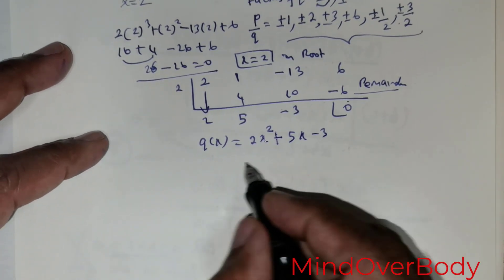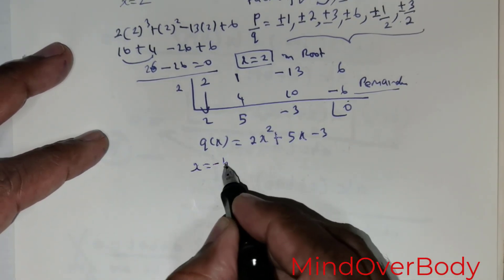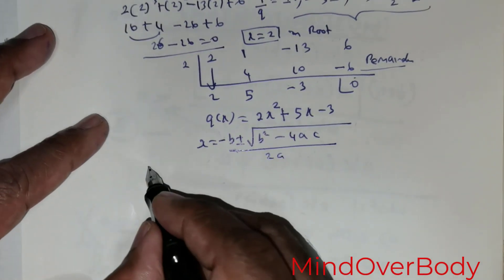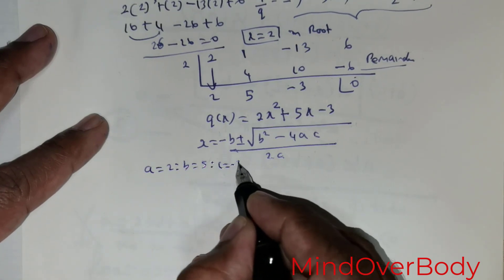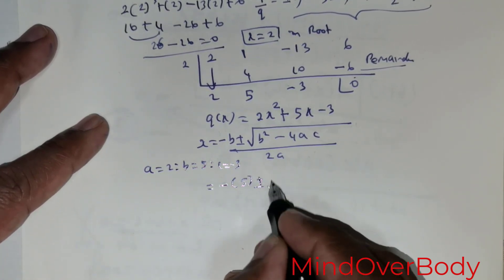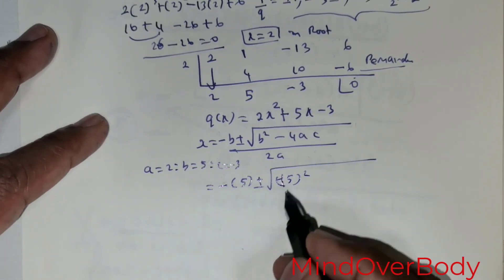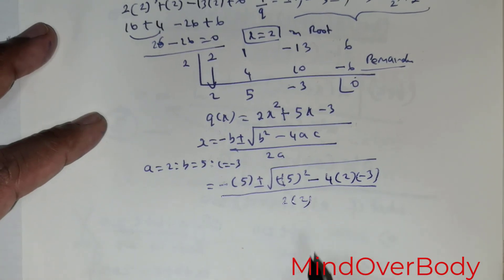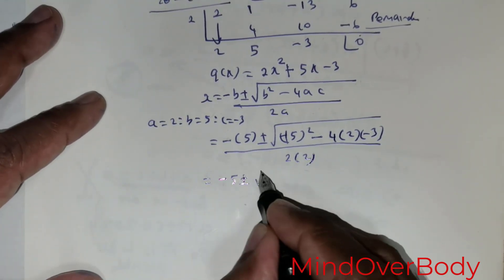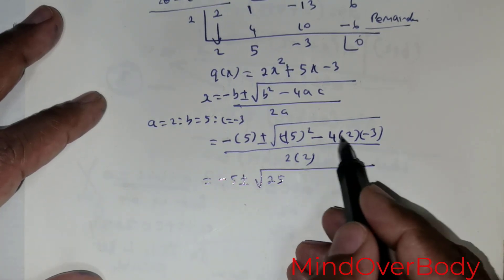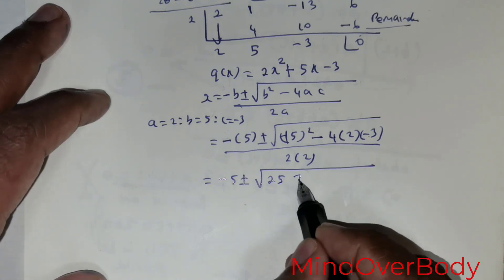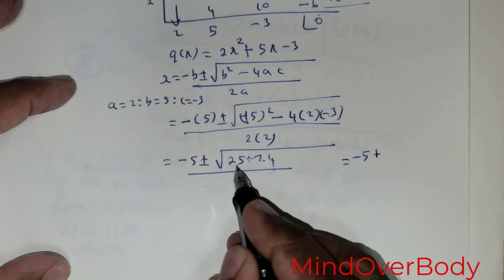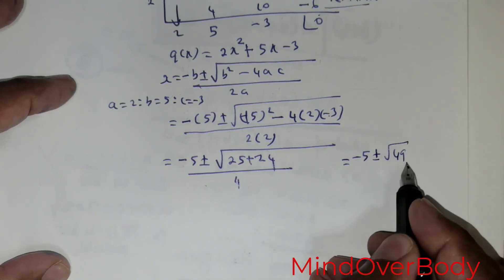Now solve 2x squared plus 5x minus 3 equals 0 using the quadratic formula: x equals negative b plus or minus the square root of b squared minus 4ac, all over 2a. Here a equals 2, b equals 5, and c equals negative 3. Substituting: negative 5 plus or minus the square root of 25 plus 24, all over 4. That gives negative 5 plus or minus the square root of 49 over 4.